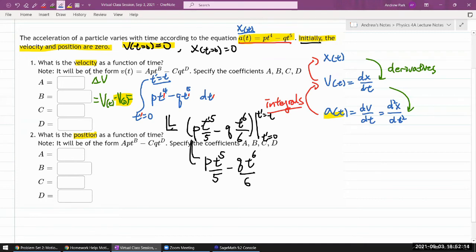So I guess I'll just write out what the answers here will be. A should be one fifth. B should be five. C should be one sixth. And d should be six.